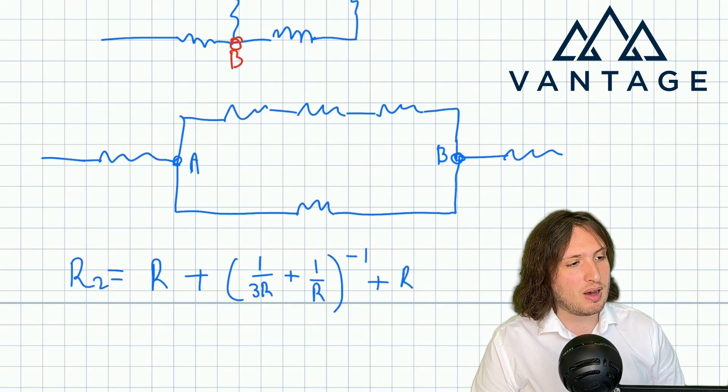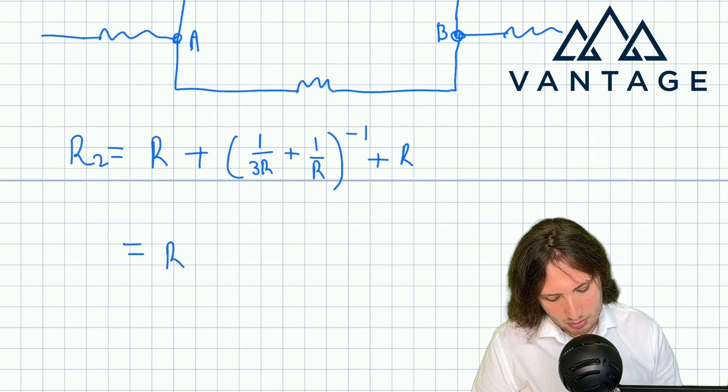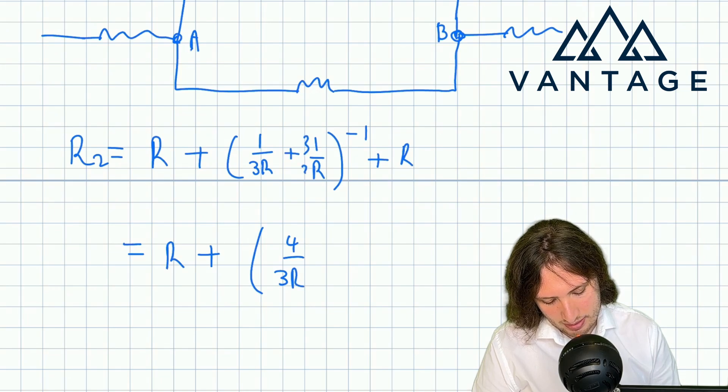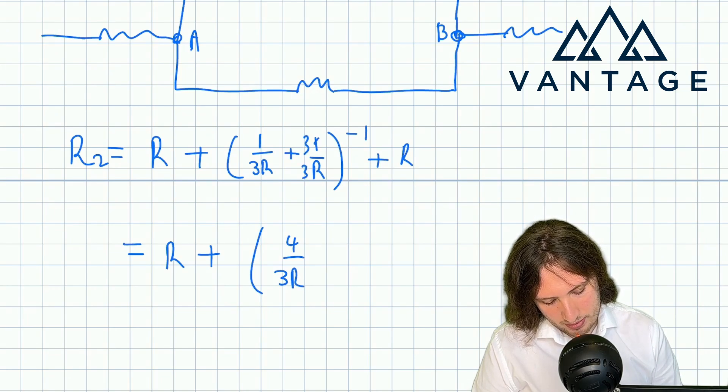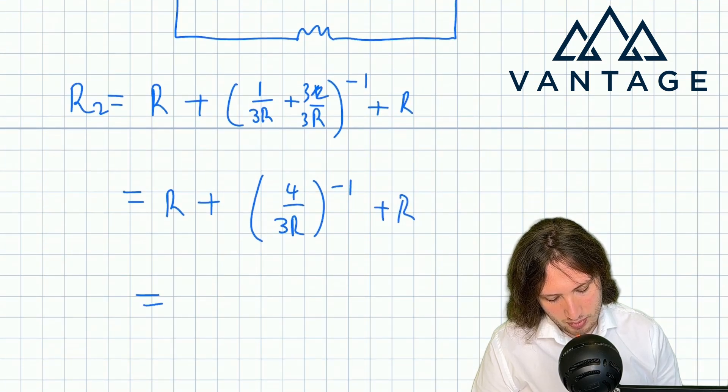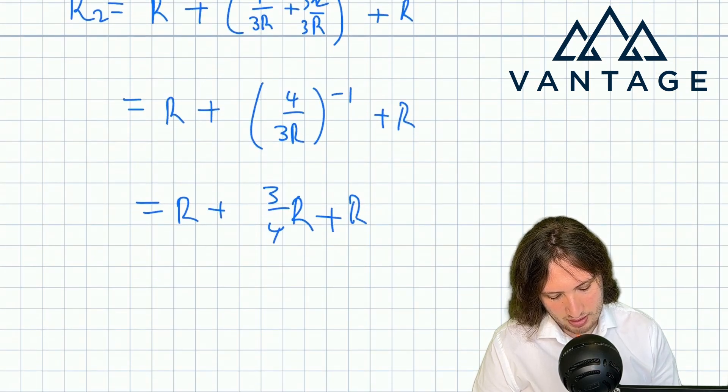And then I've got another resistor in series. So for R2 I get this which we can now process. So I've got R plus 4 by 3R, because that is that to the minus 1, plus R, which is R plus 3 quarters R plus R, which is 11 quarters R.